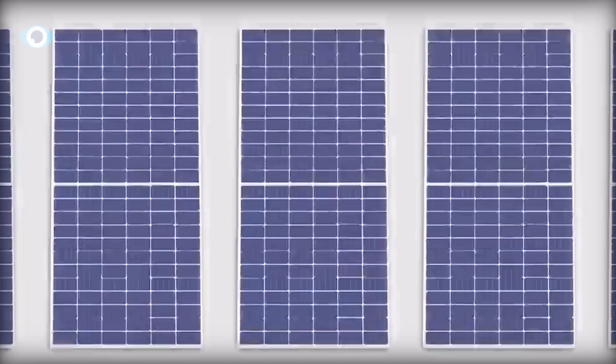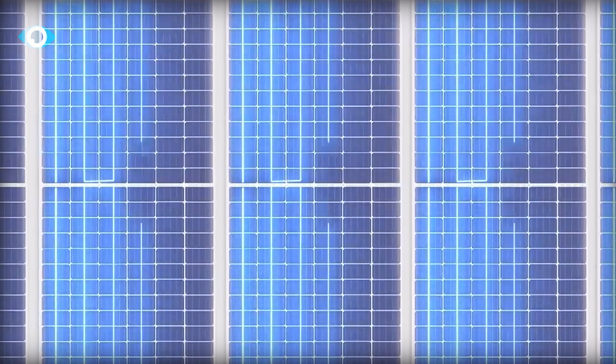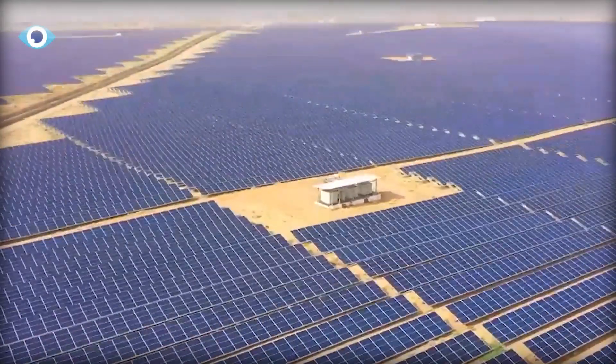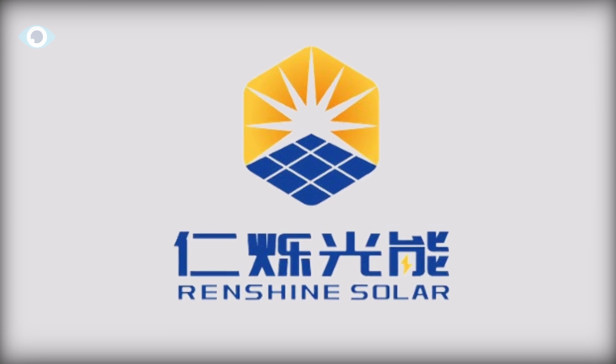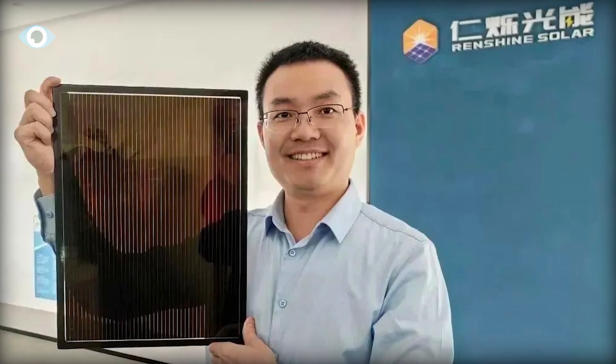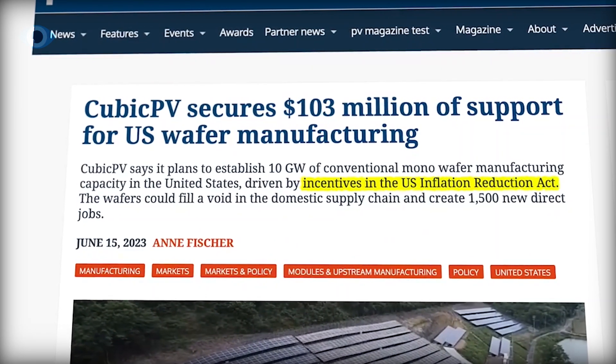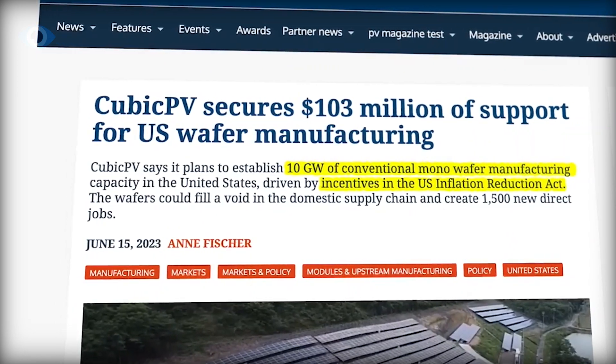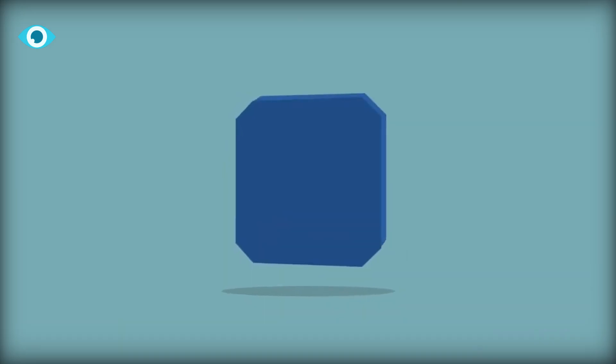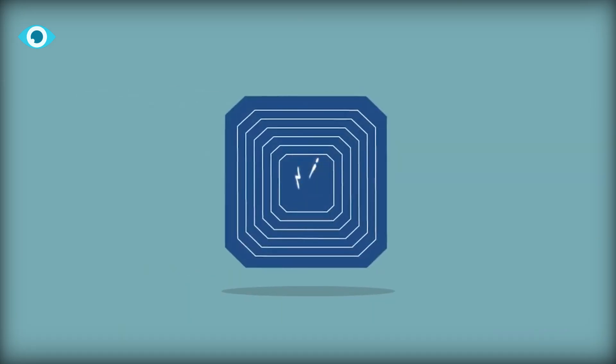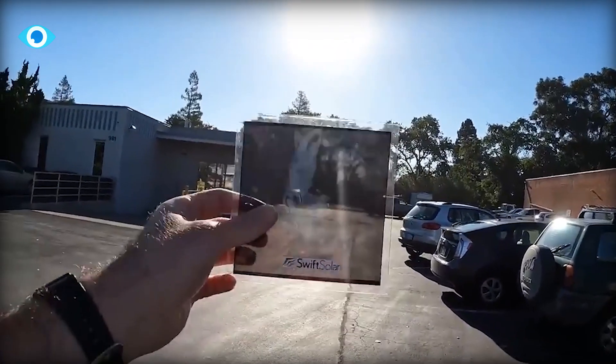Looking ahead, these perovskite-silicon solar cells could be a game-changer for solar power. Companies like Renshine Solar are already getting in on the action with plans for big projects in China and goals to start mass-producing panels by mid-2024 that are 20% more efficient. It's an exciting time for solar energy, and these new panels could be a big part of its future.